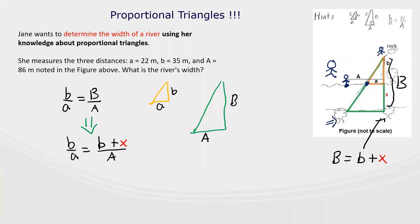So to do so, let's multiply both sides by capital A. This will cancel the capital A. And my next equation looks like this: Ab over a equals b plus X.